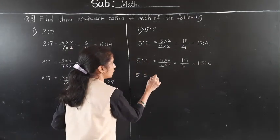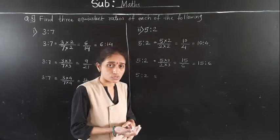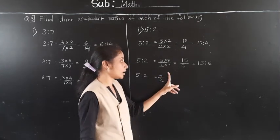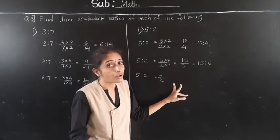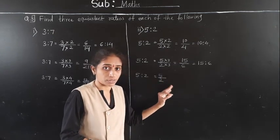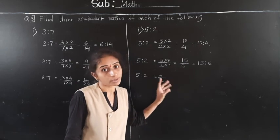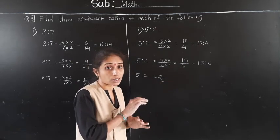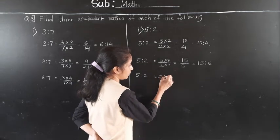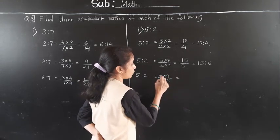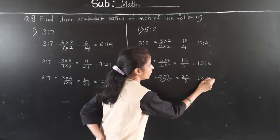You can multiply by any same number for numerator and denominator — by 5, 6, 7, or any number — as long as both are multiplied by the same value. For the third equivalent ratio, multiply by 4: 5 fours are 20, 2 fours are 8. So the third equivalent ratio is 20 to 8.